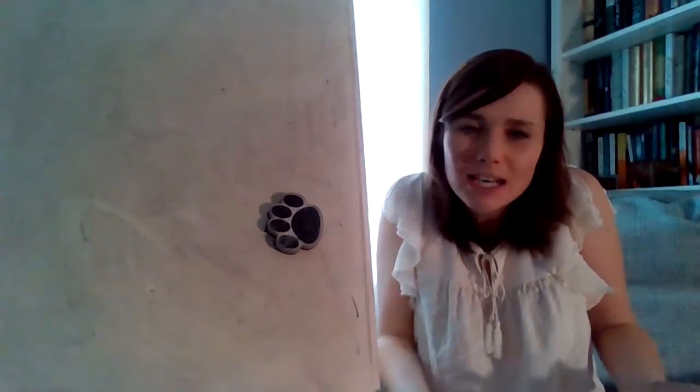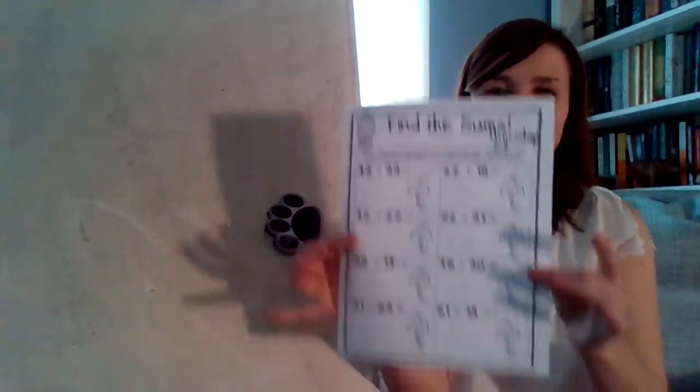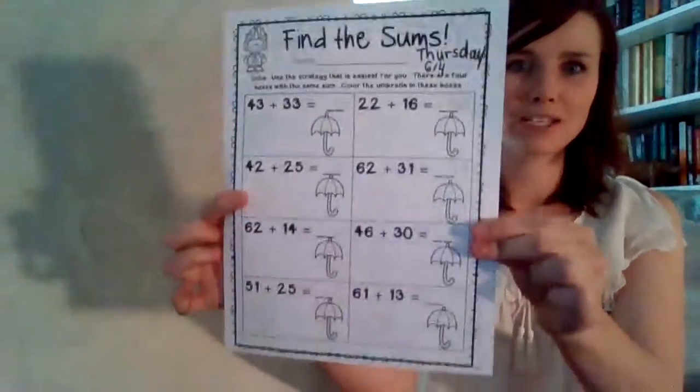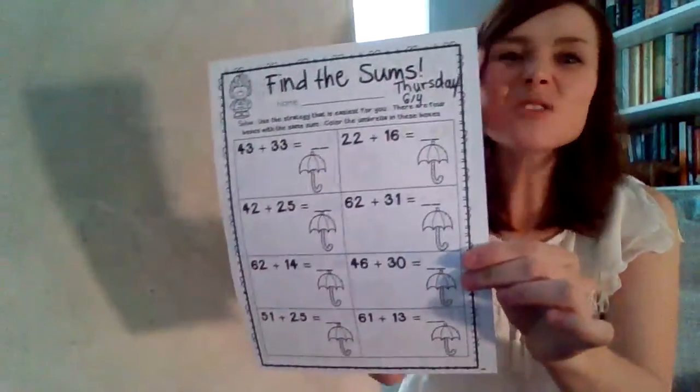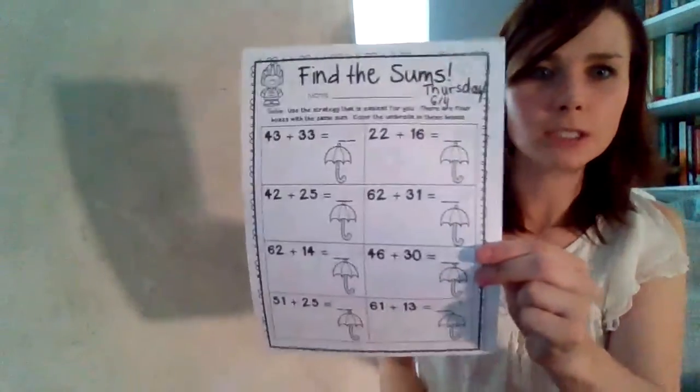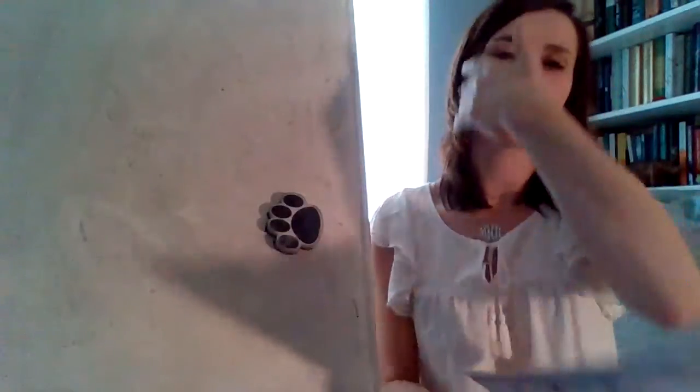So we've learned so many different strategies. We learned stack them. We learned number bond style. And we learned quick tens. And everybody likes different strategies, right? So on this worksheet, you can use any strategy you like. Whatever you think is the quickest, the most efficient, the one you're strongest in. All right. Let's start it together.